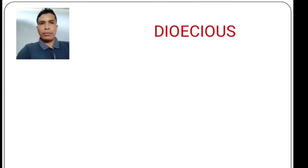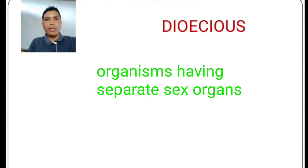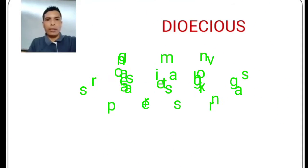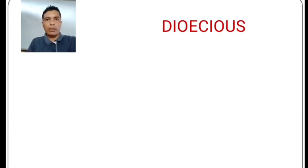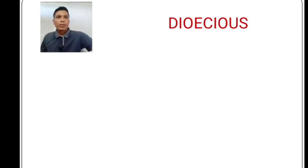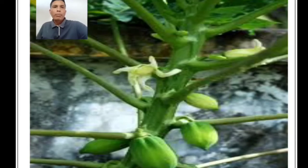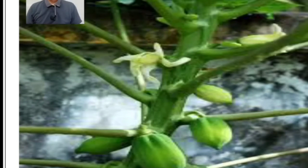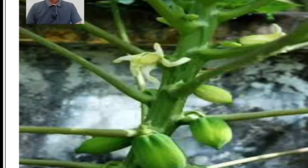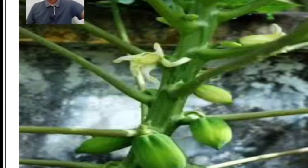What is dioecious? If the male and female sexes are present separately in separate individuals, the organisms are called dioecious. Some examples of dioecious plants are Marchantia — it is a bryophyte — and papaya. In papaya, male papaya plants bear flowers only and do not bear fruits.